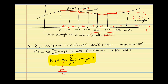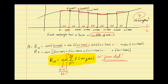j is our index, summing the heights from the first to the nth rectangle. The notation f(a + j·delta x) means we plug a + j·delta x into the original function. When j = 1, we get f(a + delta x); when j = 2, we get f(a + 2·delta x), and so on up to n. This formula will be provided on tests if needed.